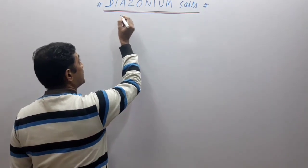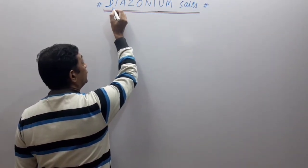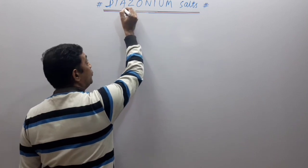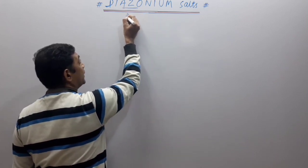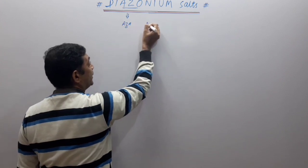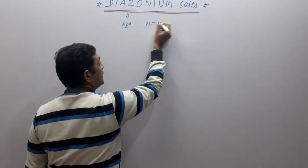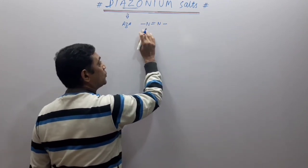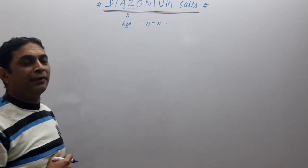First of all, students, we will understand this topic. 'Di' means two, and the 'azo' word indicates nitrogen. So 'diazo' means two nitrogens. This is a very important topic. If you have any functional group you can represent as a diazo functional group.